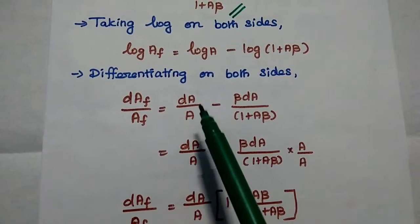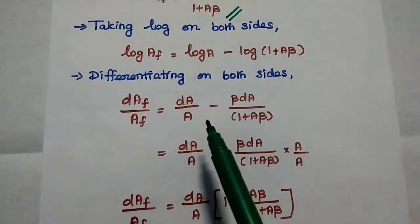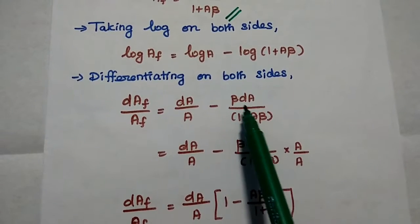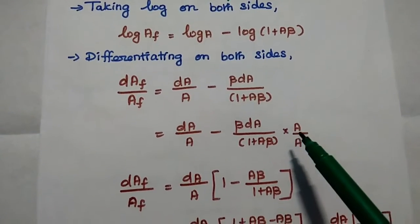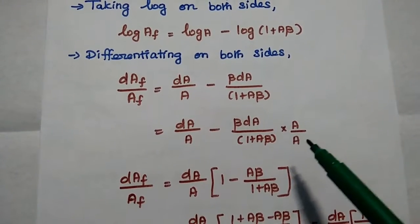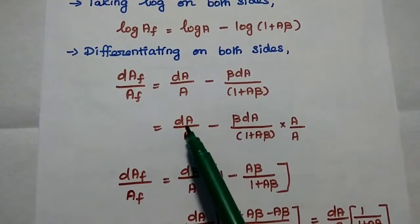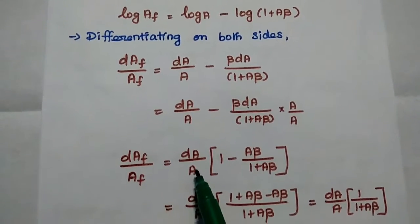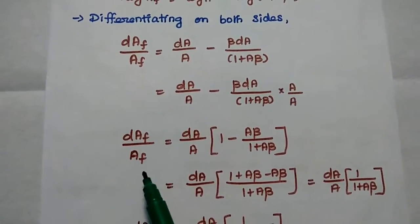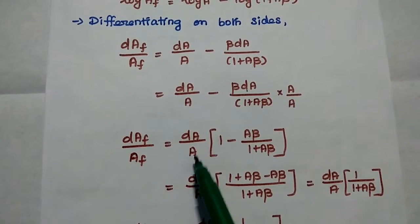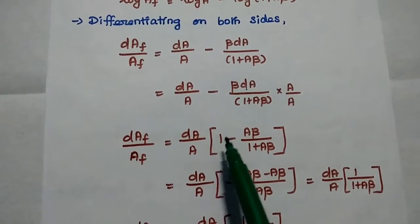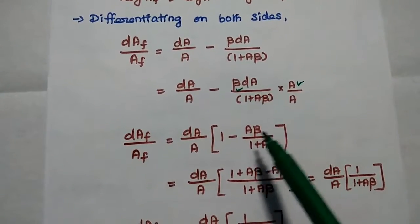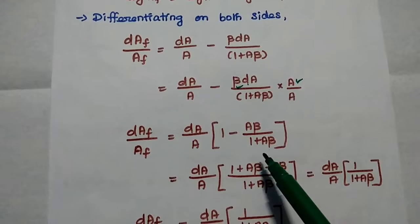We take dA/A as a common term from the right-hand side. Multiplying and dividing by A, we get dAf/Af equals dA/A multiplied by the quantity 1 minus A·beta divided by (1 plus A·beta).